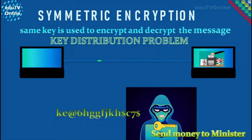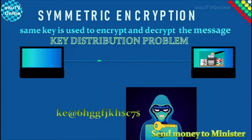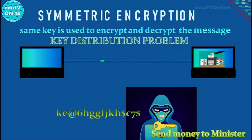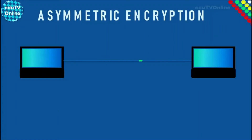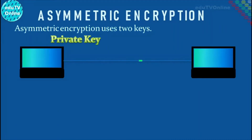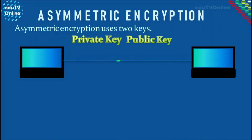To avoid the risk surrounding symmetric encryption keys, we can use asymmetric encryption. Asymmetric encryption uses two keys that work as a pair. The first key is used to encrypt the message. A message encrypted with the first key cannot be decrypted with that same key.